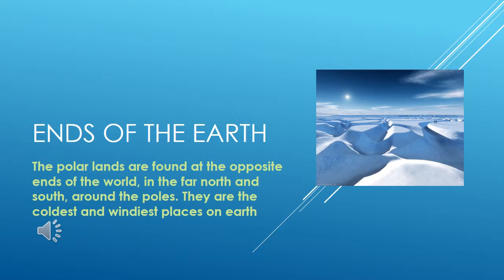Ends of the earth. The polar lands are found at the opposite ends of the world, in the far north and south around the poles. They are the coldest and windiest places on earth.